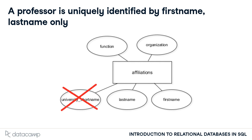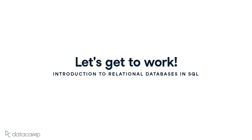In other words, the columns first_name, last_name, function, and organization are enough to store the affiliation a professor has with a certain organization. You can remove university_short_name and this will reduce the redundancy in your database again. Time to prepare the database for data migration.